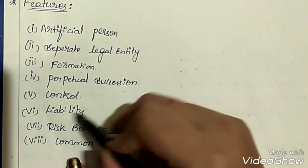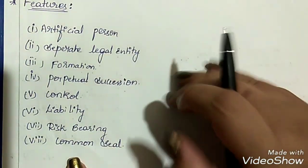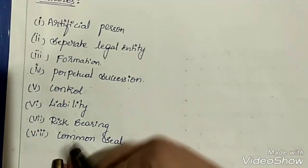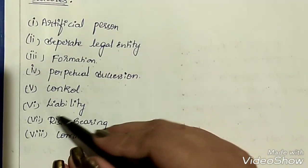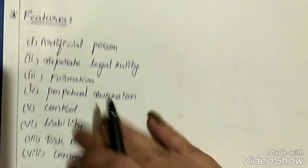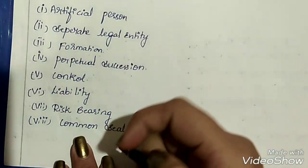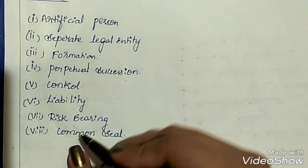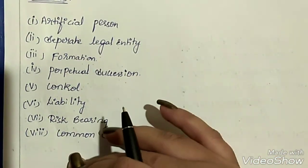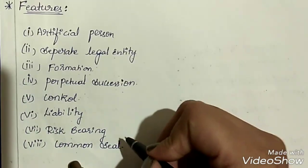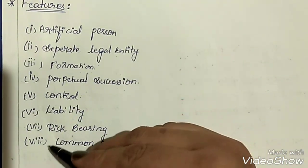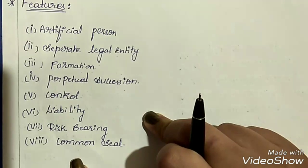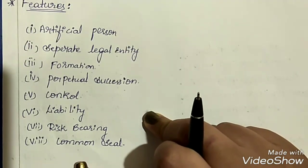Next feature is liability — the liability of shareholders is limited in this type of organization; the liability of every owner is limited. Risk bearing is shared among all shareholders according to their capital investment ratio, so the risk is collectively borne by all. Lastly, common seal — the joint stock company has a common seal that must be compulsorily mentioned on each and every necessary document of the company.